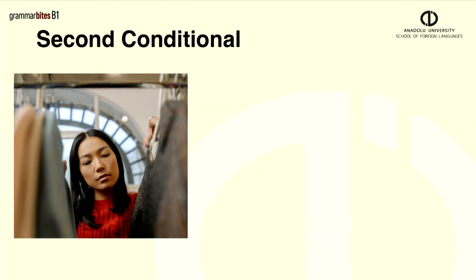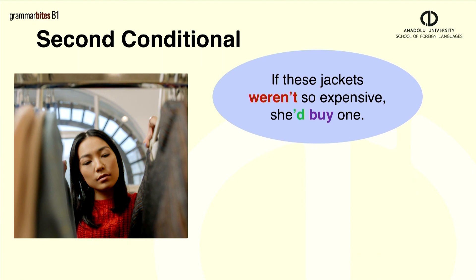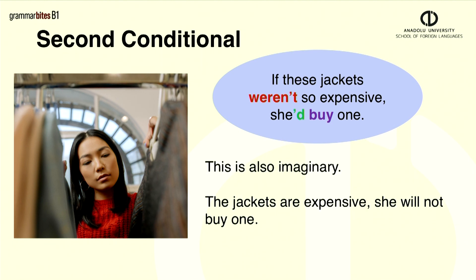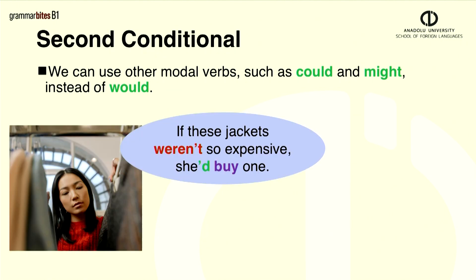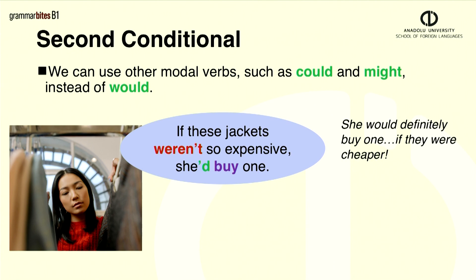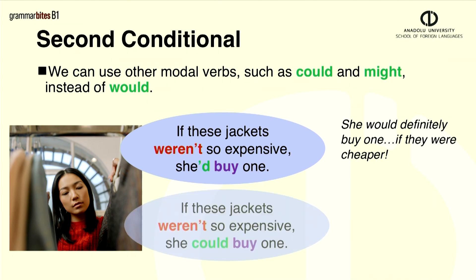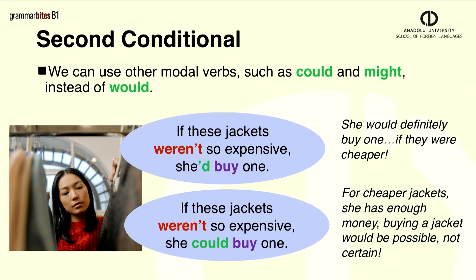And another imaginary situation. If these jackets weren't so expensive, she'd buy one. They are expensive. She will not buy one. We can also use other modal verbs such as could and might instead of would. If the jackets were cheaper, she would definitely buy one. But if the jackets weren't so expensive, she could buy one — the meaning is different. For cheaper jackets, she has enough money. Buying the jacket would be possible, not certain.